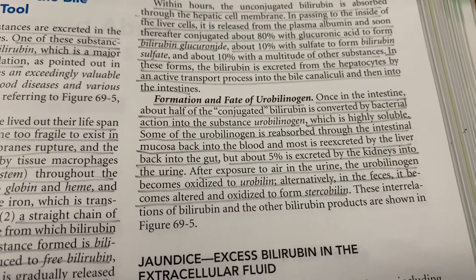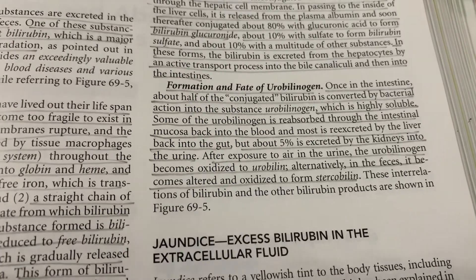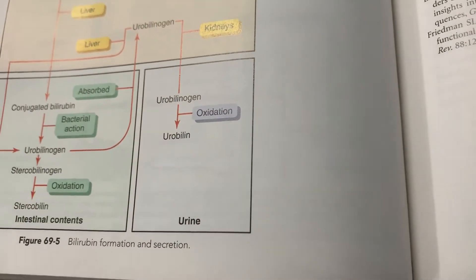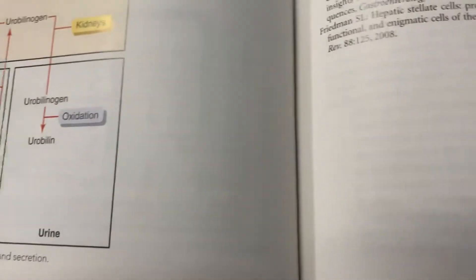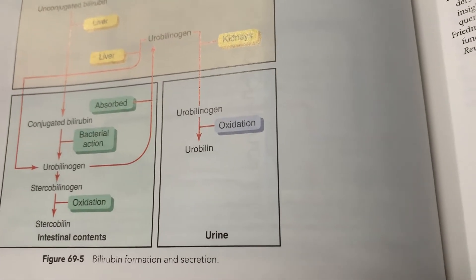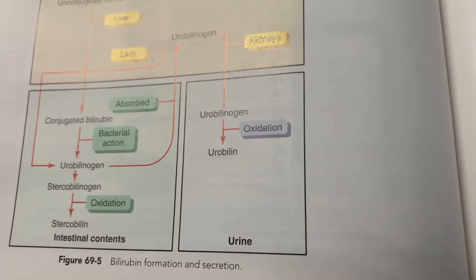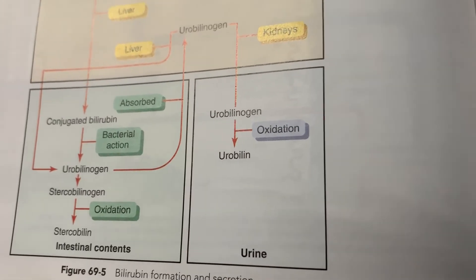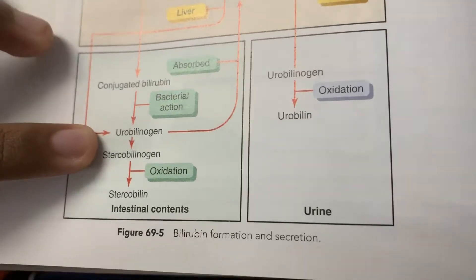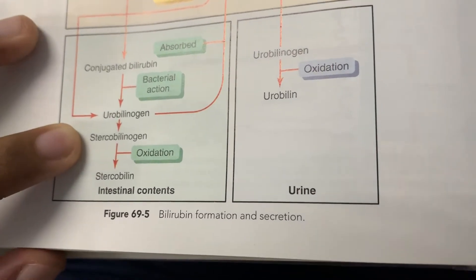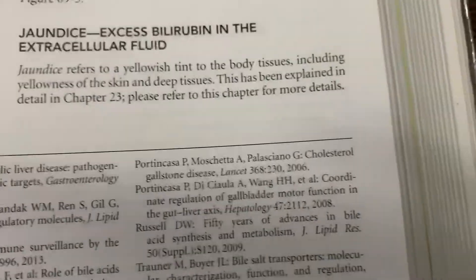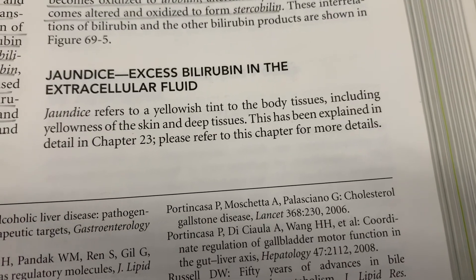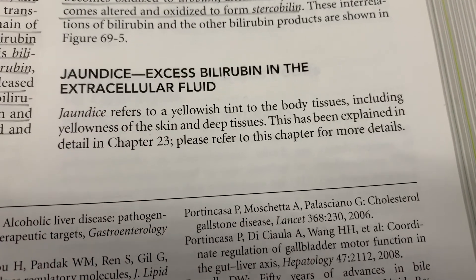Once in the intestines, about half of the conjugated bilirubin is converted by bacterial action into urobilinogen, which is highly soluble. Some urobilinogen is reabsorbed through the intestinal mucosa back into the blood, and most is re-excreted by the liver; about 5% is excreted by the kidneys into the urine, where exposure to air oxidizes it to urobilin. In the feces, urobilinogen is converted into stercobilinogen, which is oxidized to stercobilin. Jaundice refers to excess bilirubin in the extracellular fluid, causing a yellowish tint in body tissues including the skin and deep tissues.